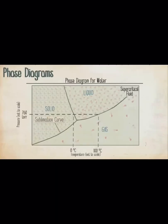Each line in a phase diagram represents conditions in which the two states on either side of the line coexist in equilibrium. The sublimation curve represents conditions under which the solid and the gas coexist. The vaporization curve represents conditions under which the liquid and the gas coexist. And the fusion curve represents conditions under which the solid and the liquid coexist.